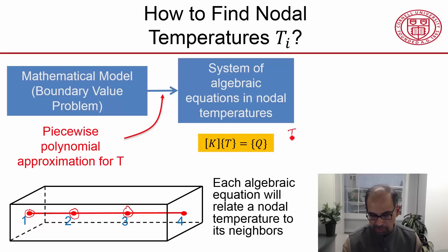T is going to be T1, T2, T3, T4. So that's what that's going to look like in our case.